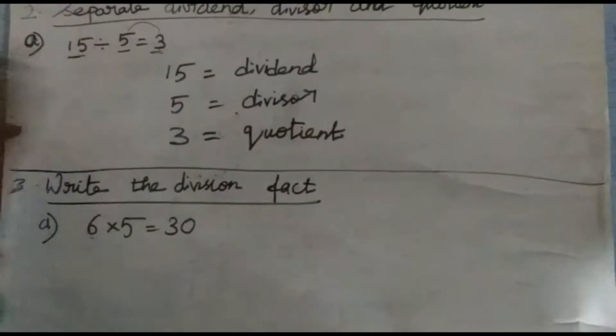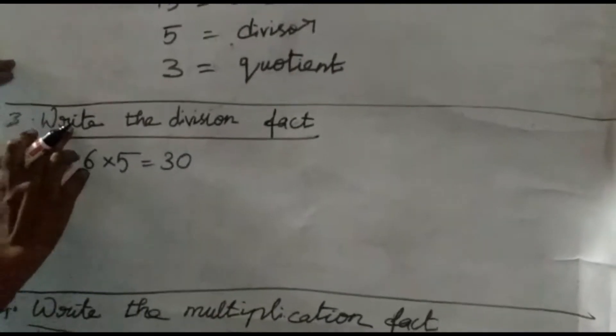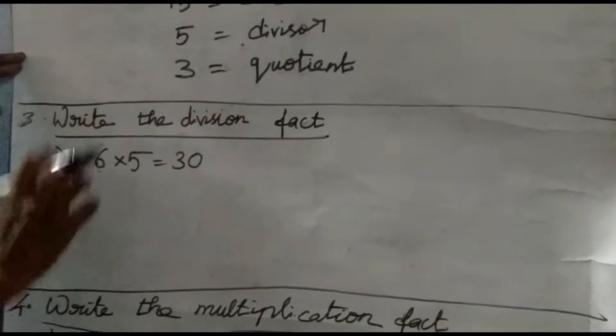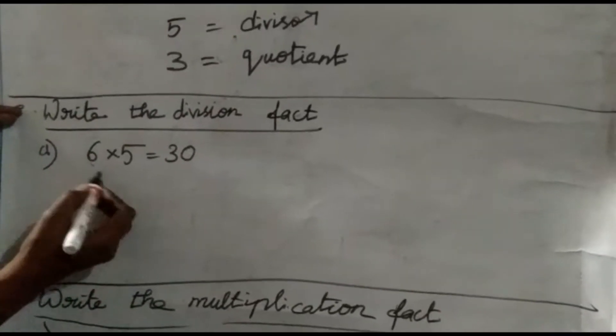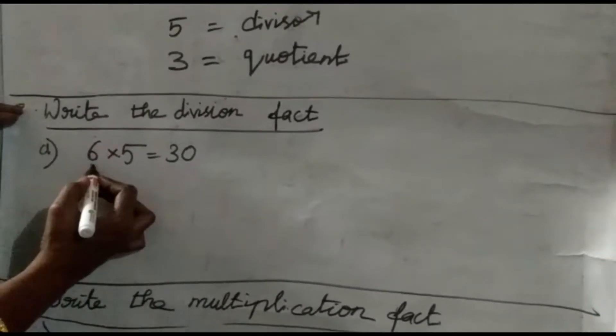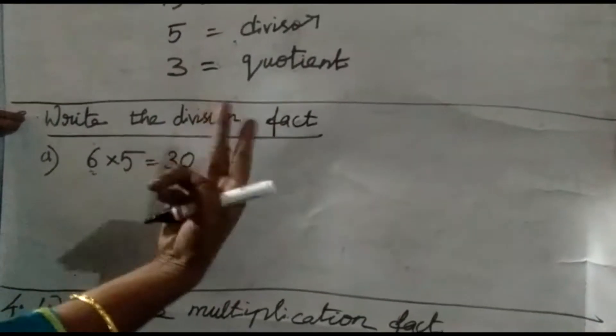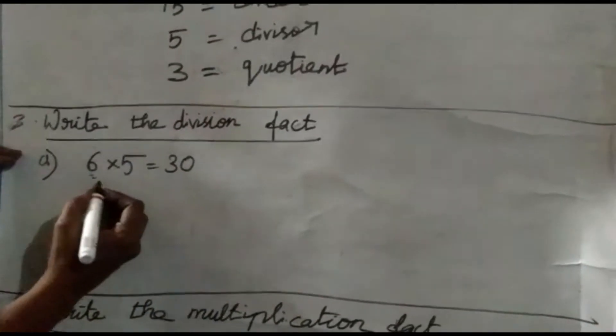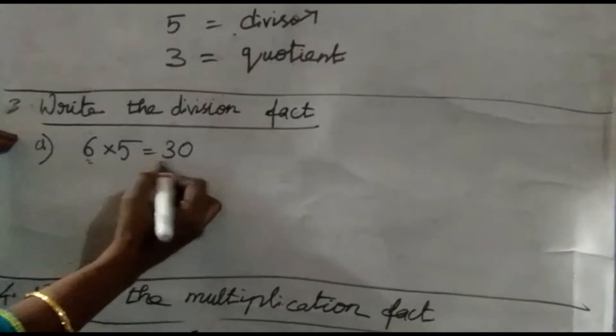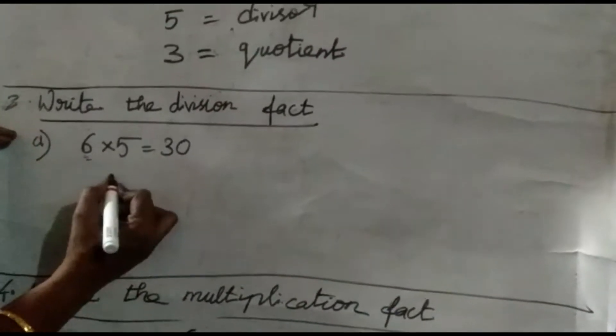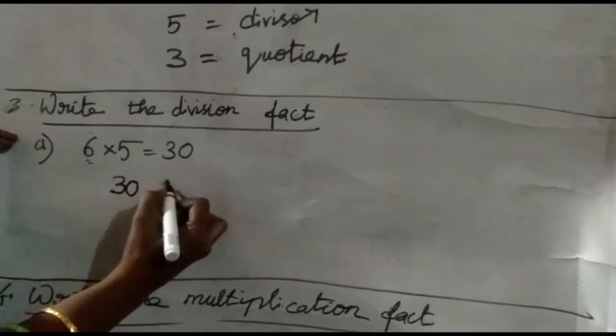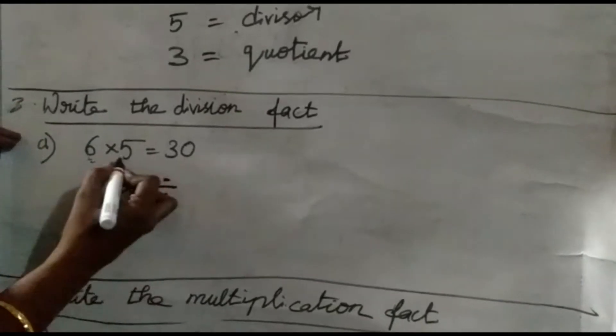Next, write the division fact for the given number. See here, the multiplication fact is given. For this multiplication fact, we are going to write division fact. We can write two division facts for this. See here, 6 times 5 is 30. Which is the biggest number here? So 30. So 30 divided by this 5 equals 6.